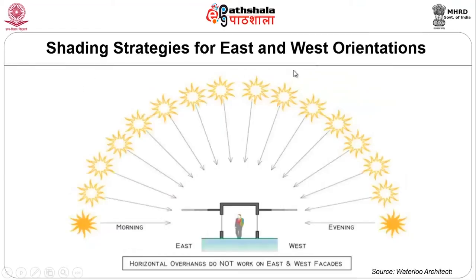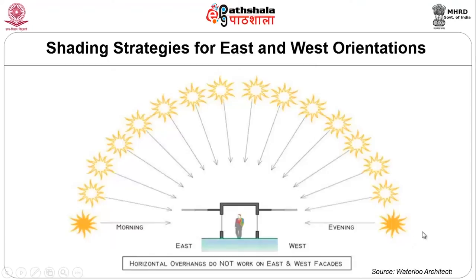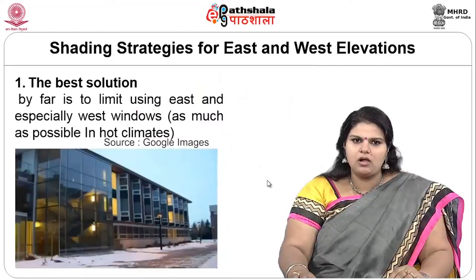Shading strategies for east and west orientations: horizontal overhangs do not work on east and west facades. As the sun rises in the east, it is at maximum low angle, and the horizontal device doesn't serve any purpose. Similarly, in the evening as the sun sets in the west, when it is at maximum angle while setting, all the heat will enter the house and the horizontal overhang really doesn't help.